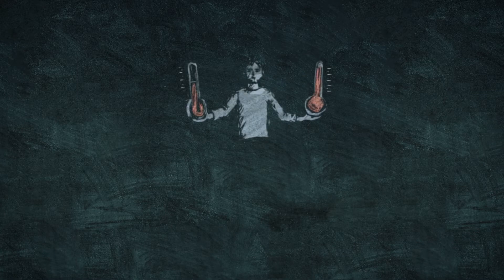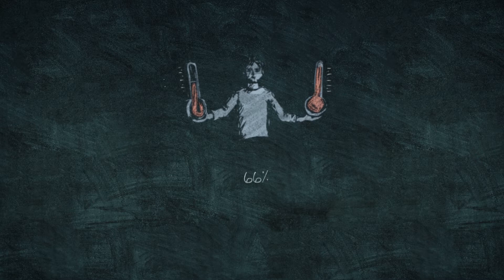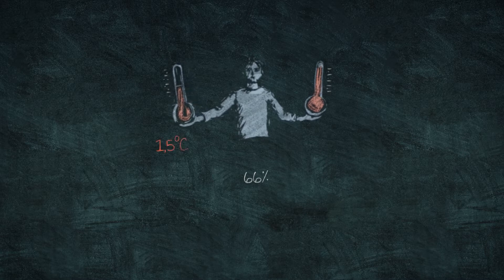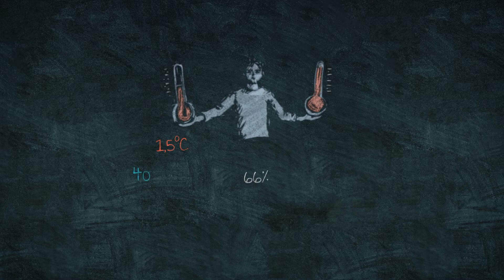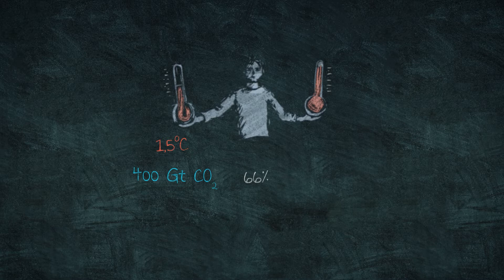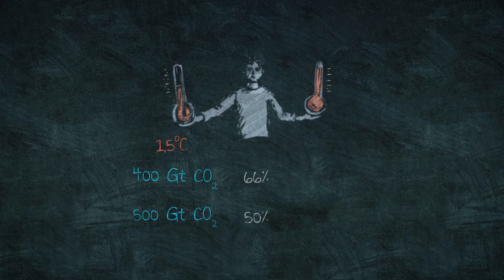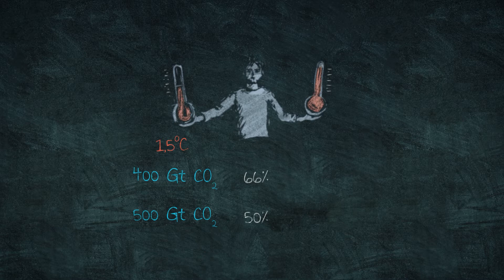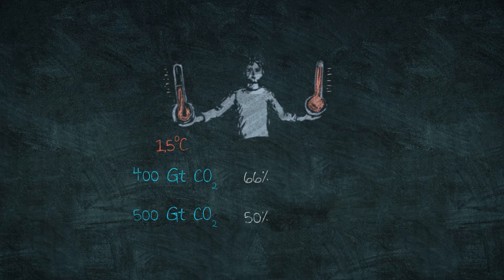Based on current scientific calculations, we have a two-thirds chance of limiting global warming to 1.5 degrees if we, as humans, emit no more than 400 gigatons of CO2 starting from 2021. At 500 gigatons of CO2, this probability drops to 50%. In other words, if we emit more than 500 gigatons of CO2, there is a 50% probability to fail and not stay within the 1.5 degree limit.